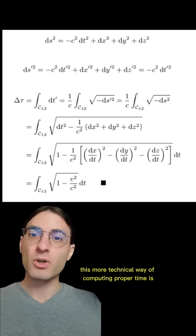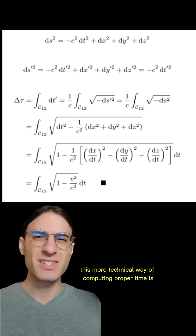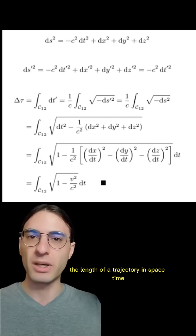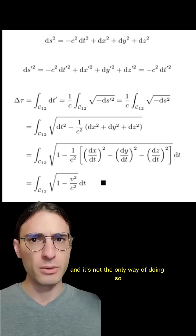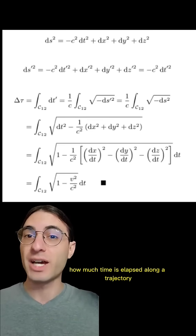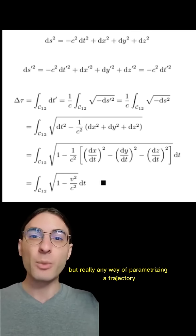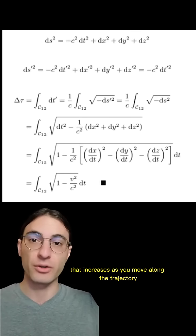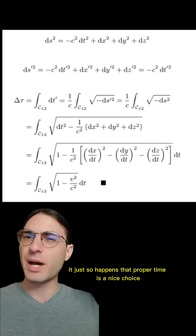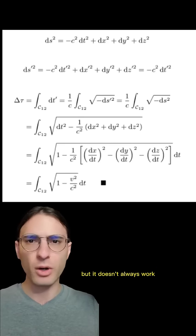But importantly, this more technical way of computing proper time is essentially just a nice way of computing the length of a trajectory in spacetime. And it's not the only way of doing so. So if we want to measure how much time is elapsed along a trajectory through spacetime, proper time is one way, but really any way of parametrizing a trajectory that increases as you move along the trajectory works just as well. It just so happens that proper time is a nice choice, but it doesn't always work.